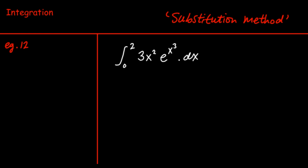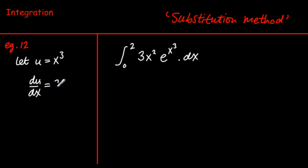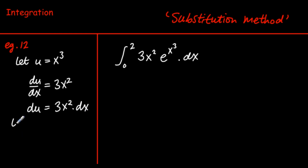Substitution method: when we have something that looks complicated, we let u be the highest power of x we see — in this case, u = x³. We differentiate: du/dx = 3x². We know we're on the right track because 3x² appears in the initial expression. So du = 3x² dx, multiplying across by dx.